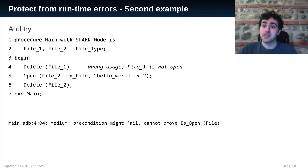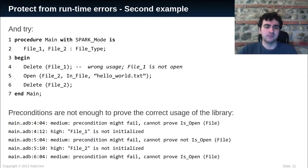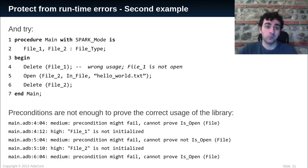However, lines 5 and 6 are correct — the subprograms are called in the correct order. But Spark does not manage to prove that we used the procedures correctly. We also get messages stating that files are not initialized. In fact, Spark is missing two pieces of information. First, we need to annotate the type so that Spark knows that by default a file is not open. Second, we need to add postconditions to Open and Delete so that Spark knows the open status of the file after a call to these subprograms.